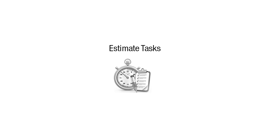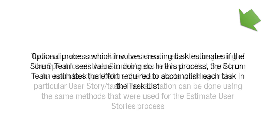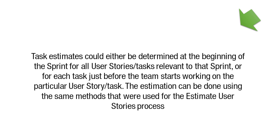The next process is estimate tasks. This is an optional process which involves creating task estimates if the Scrum team sees value in doing so. In this process, the Scrum team estimates the effort required to accomplish each task in the task list. Task estimates could either be determined at the beginning of a sprint for all user stories and tasks relevant to that sprint, or for each task just before the team starts working on the particular user story or task. The estimation can be done using the same methods that were used for the estimate user stories process.